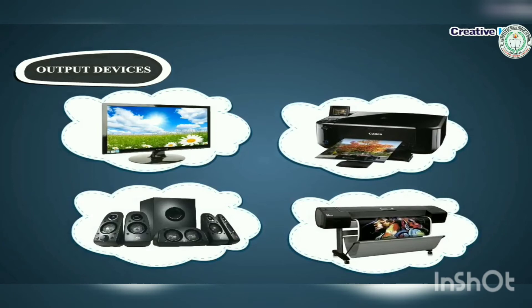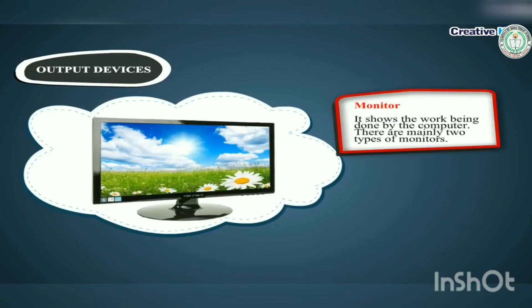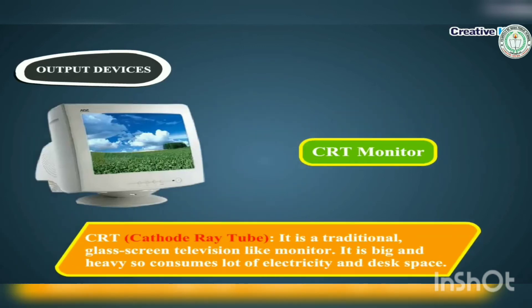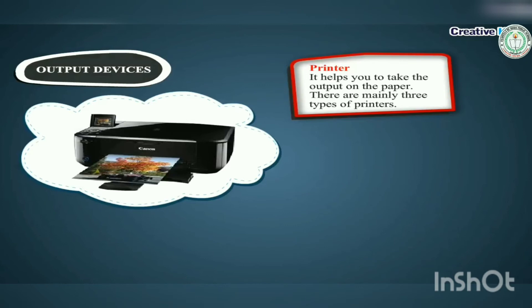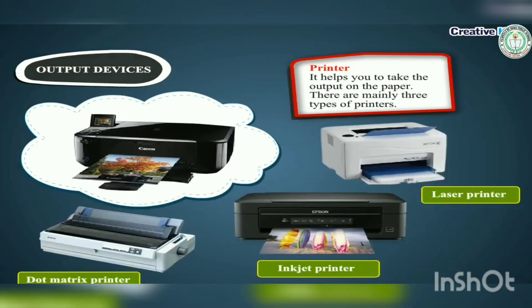Output devices show the result of the work done by the computer. The most commonly used output devices are monitor and printer. Monitor: It shows the work being done by the computer. There are mainly two types — CRT (Cathode Ray Tube), a traditional glass screen television-like monitor that is big, heavy, and consumes a lot of electricity and desk space; and LCD (Liquid Crystal Display), the newer flat panel display that is lightweight and consumes less electricity and desk space. Printer: It helps you take the output on paper. There are mainly three types: dot matrix printer, inkjet printer, and laser printer.